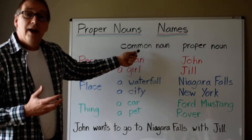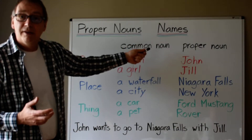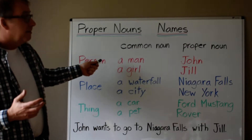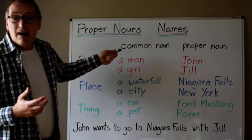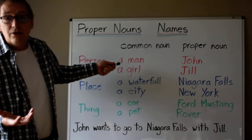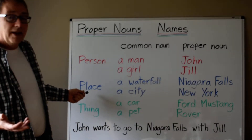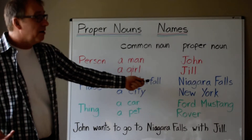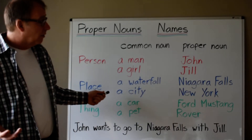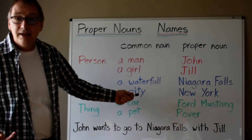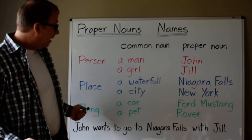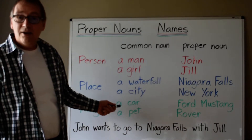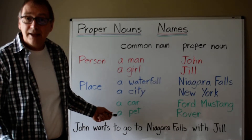Here we have some common nouns. Common nouns can be a man or a girl. For a place, perhaps a common noun is a waterfall or a city. Other common nouns for things could be a car or a pet.